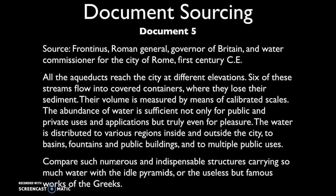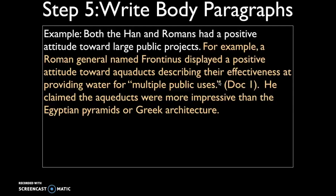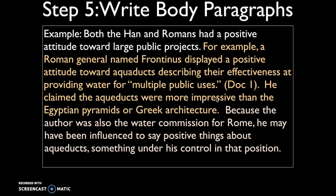Let's practice sourcing using the same document. The source line reads: Frontinus, a Roman general, governor of Britain and water commissioner for the city of Rome in the first century CE. Thinking about how his characteristics impact what he's saying, your sourcing might look like this: 'Because the author was also the water commissioner for Rome, he may have been influenced to say positive things about aqueducts — something under his control in that position.' That suggests a limitation and potential bias given his function as water commissioner speaking about water issues in Rome.